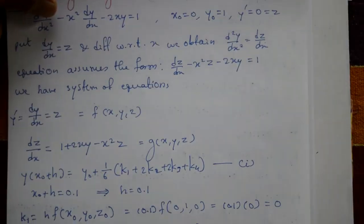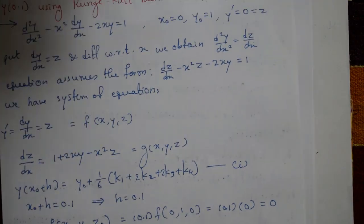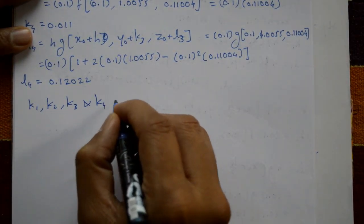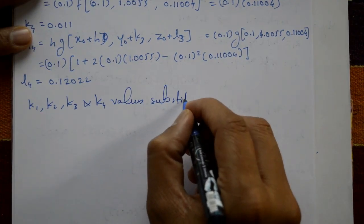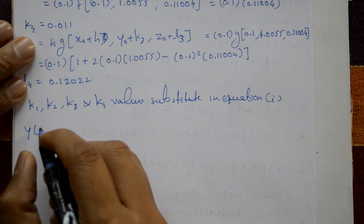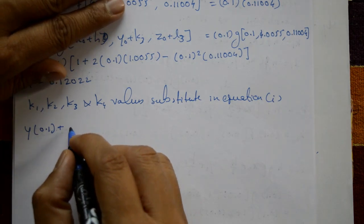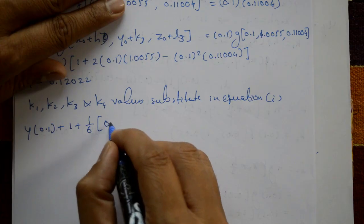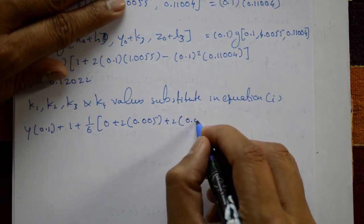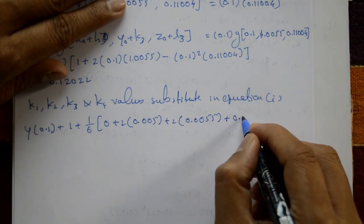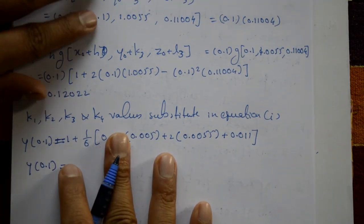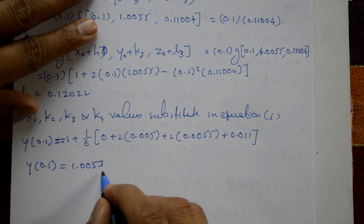Substituting k1, k2, k3, k4 into the RK4 formula: y(0.1) = y₀ + (1/6)(k1 + 2k2 + 2k3 + k4) = 1 + (1/6)(0 + 2·0.005 + 2·0.005 + 0.011) = 1.0053. Therefore y(0.1) = 1.0053 is the required solution.